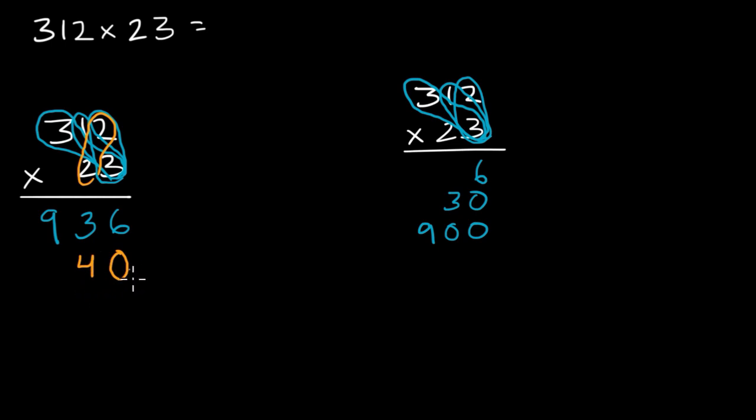Now notice, when I write it down, it's actually 40. And that makes sense, because I really did 20 times 2, which is 40. Then I could say, what is 2 times 1? Well, that is just 2. But notice, this 2 is in the hundreds place. And that makes sense, because 20 times 10 is 200.